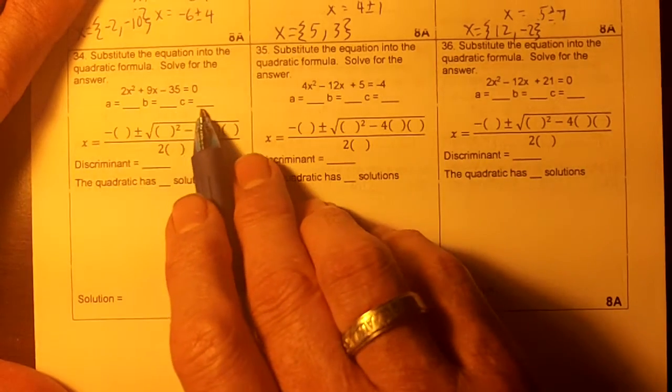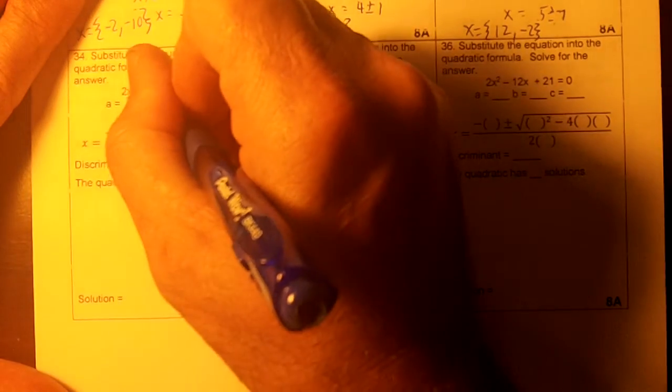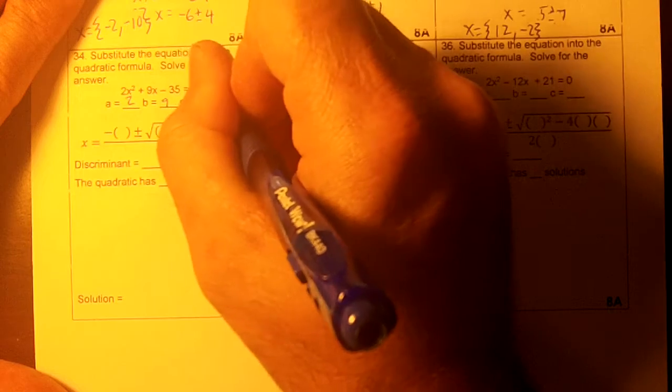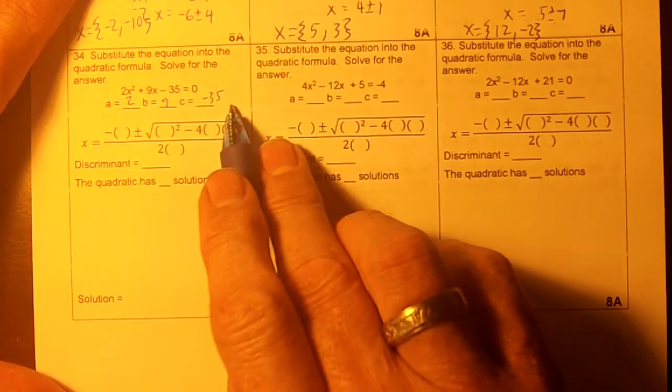Okay, so we're going to identify A, B, and C. So A equals 2, B equals 9, C equals negative 35. So I have A, B, and C.